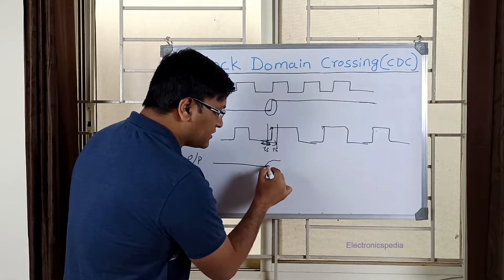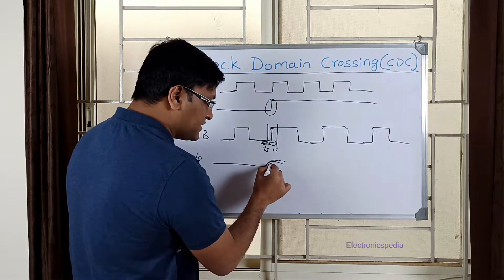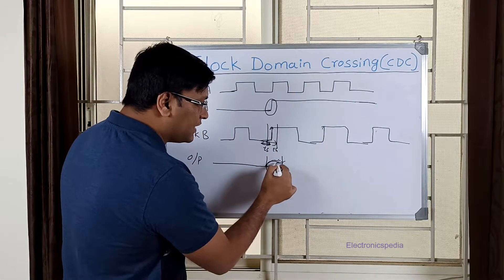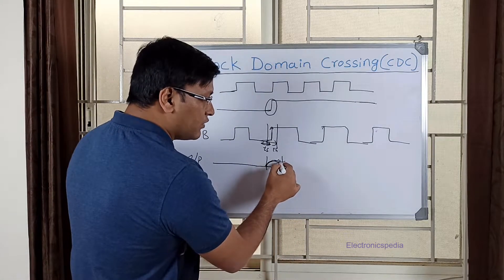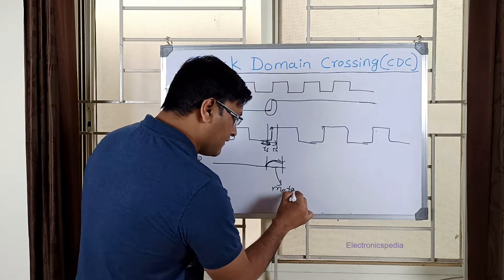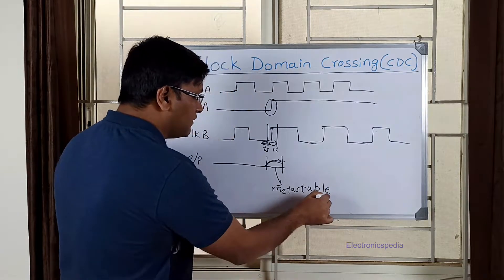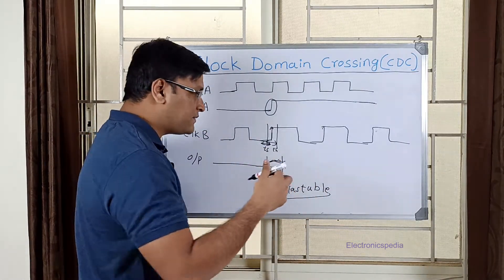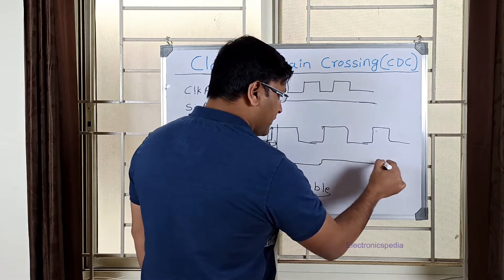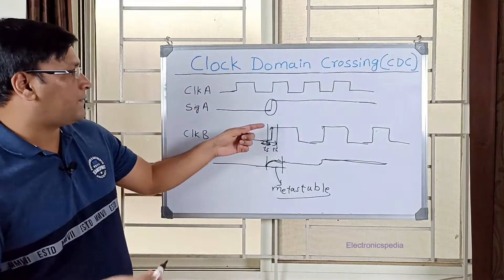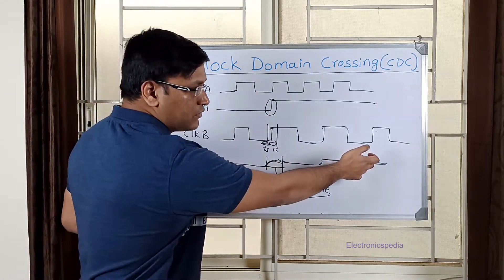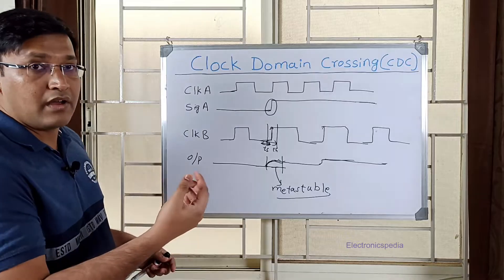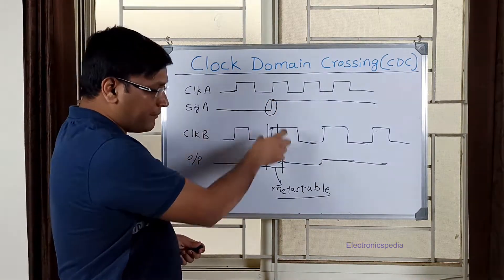We don't know what the behavior of this signal is — it can be zero, one, or sampled as zero. In the first flop, whenever you are sampling, it can go into a metastable state and you don't know the behavior. This is called a metastable condition. It's going to a metastable state, but further down, if you have a few more stages of flops, it can eventually settle and sample a proper value. This is the basics of what a metastable state is.